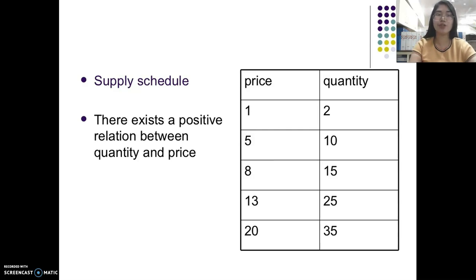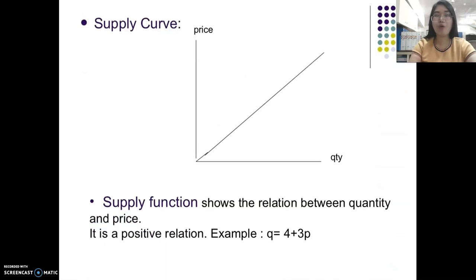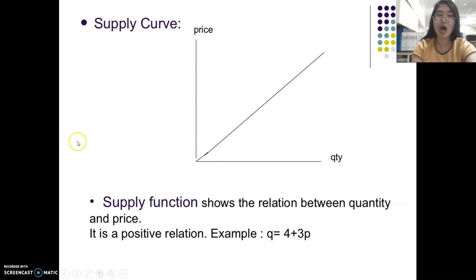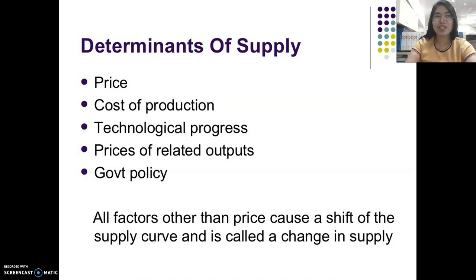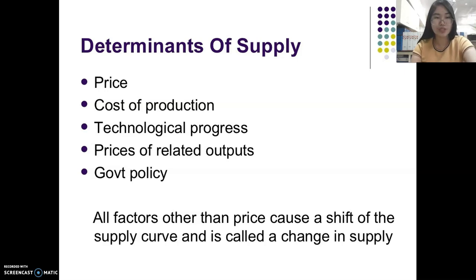There is a positive relationship between price and quantity supplied. The supply curve is upward sloping, reflecting this positive relationship. A movement from one point to another along the same supply curve is brought about by an increase or decrease in price — these are price determinants. The determinants of supply include the price of the product itself, cost of production, technological progress, prices of related outputs, and government policy such as laws and regulations.